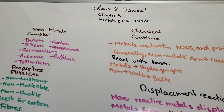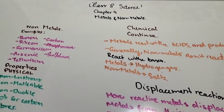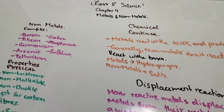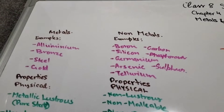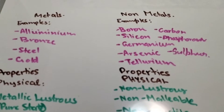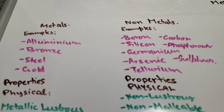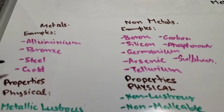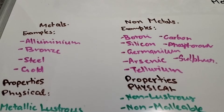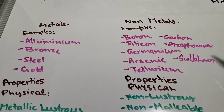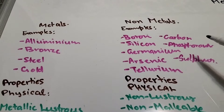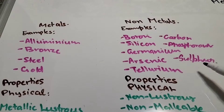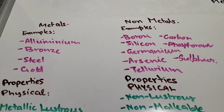Hello everyone and welcome back. In today's video we're going to be exploring Classic Science Chapter 4: Metals and Non-metals. Some examples of metals can be aluminum, bronze, steel, and gold. Some examples of non-metals can be boron, carbon, silicon, phosphorus, germanium, arsenic, sulfur, and tellurium. These are just names of elements — elements are just the finest you can break any material into.